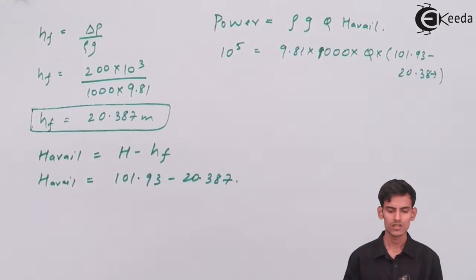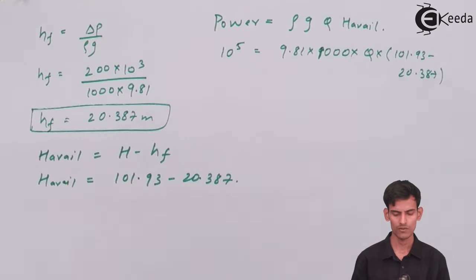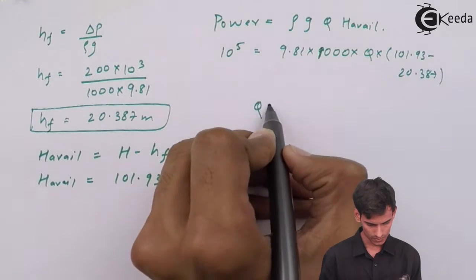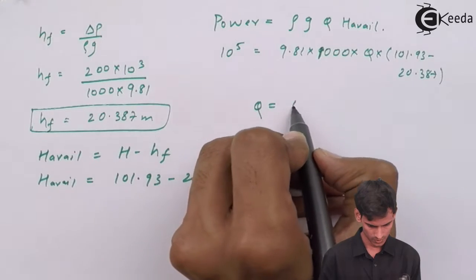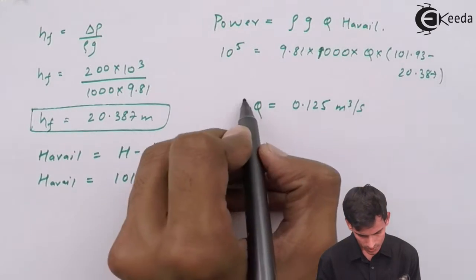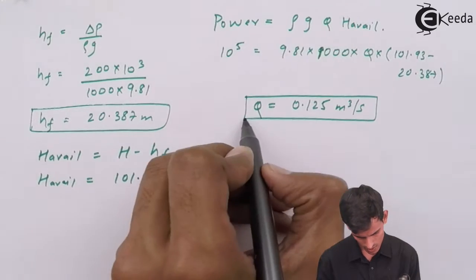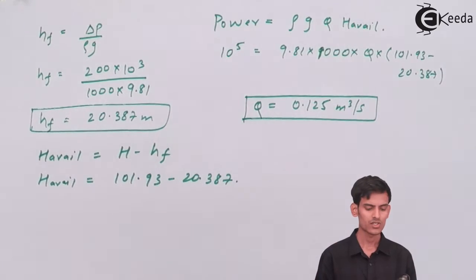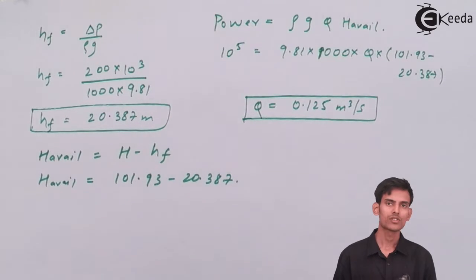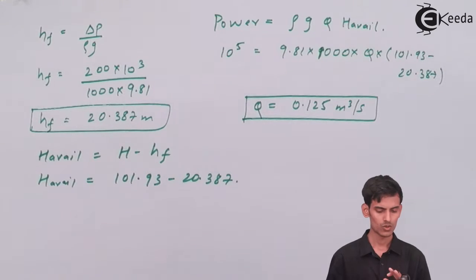As you can see here in this equation, everything is known except for the value of q. Once you shift the terms here and there, you get the value of q. So the discharge comes out to 0.125.